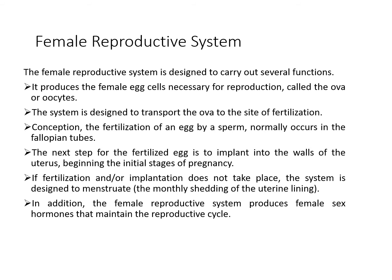The first function is to produce the egg cells necessary for reproduction, called the ova or oocyte. The second function is to transport the ova to the site of fertilization. The fertilization of the egg by the sperm normally occurs in the fallopian tube. The fertilized egg then implants into the wall of the uterus, beginning the initial stage of pregnancy.